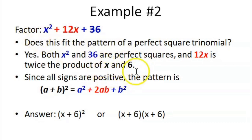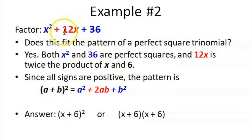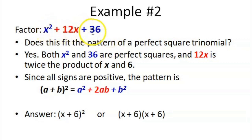That is the square root of the first term and the square root of the last term, or quantity (x + 6) times (x + 6). Always remember: if you multiply x by 6 and then multiply by 2, and if the result does not match the middle term, then it is not a perfect square trinomial. But in this case, the product of x and 6 multiplied by 2 gives 12x, which matches — therefore, this is a perfect square trinomial.